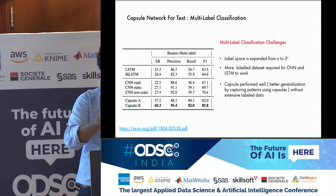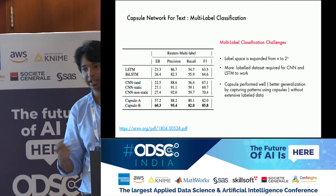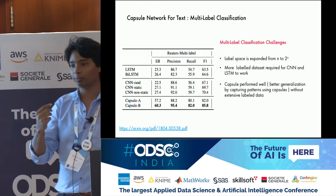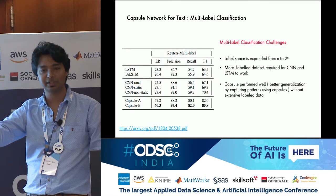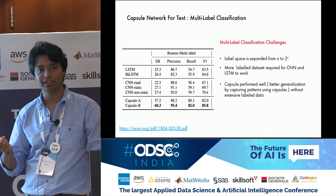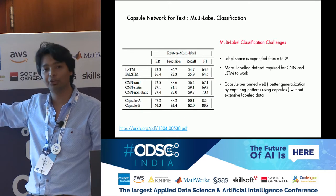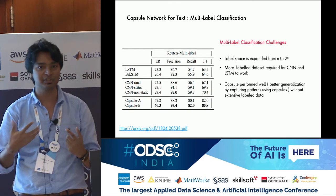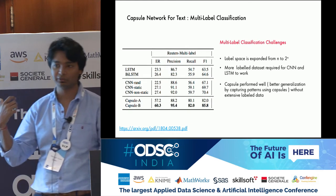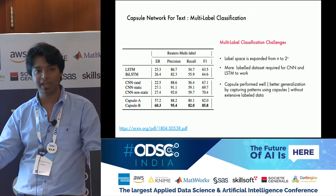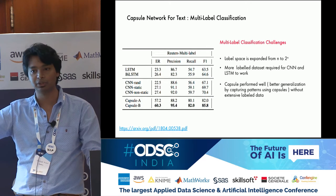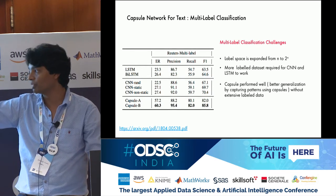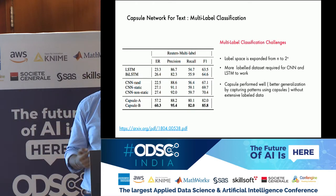In multi-label classification, instead of a single label you predict multiple labels — for example in tagging, where you associate multiple labels with a particular text. This is a challenging task because the label space increases from n to 2 to the power n, as you can have any combination. Using traditional CNN or LSTM approaches requires a huge amount of data to build models with reasonably high accuracy. However, with capsules, even with the same data trained on single labels and predicting multiple labels, the performance was quite high. That is another major benefit you can leverage with capsules.